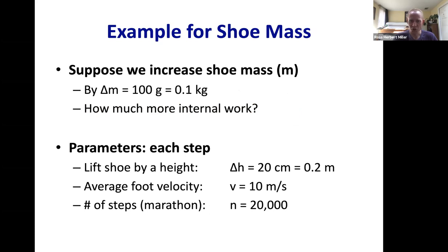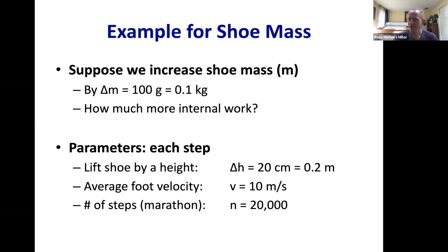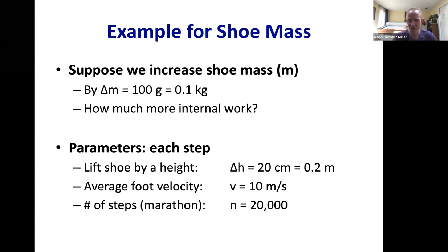The extra potential energy per marathon is: 0.1 kg × 9.81 m/s² × 0.2 m × 20,000 steps ≈ 4,000 joules. The extra kinetic energy is: ½ × 0.1 kg × (10 m/s)² × 20,000 steps = 100,000 joules. Total extra work: approximately 104,000 joules — just over 1% of the roughly 10 million joules of total mechanical work done in a marathon. A 1% difference in economy is meaningful for marathon performance.